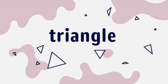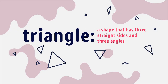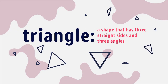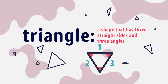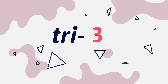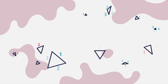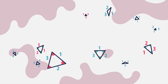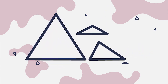A triangle is a two-dimensional shape that has three straight sides and three angles. The prefix tri means three. Although all triangles have three straight sides and three angles, they can look very different depending on the lengths of their sides and the measures of their angles.